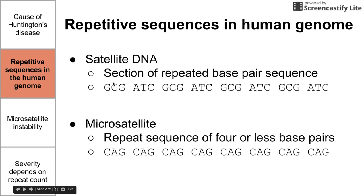Satellite DNA is a section of repeated base pair sequences. So if this is a section of DNA, we would consider this satellite DNA because it's repeating GCG-ATC. When these satellite sequences are very small, we call them microsatellites — specifically when there are four or fewer base pairs in length. This is an example of a microsatellite where we see the CAG codon repeated again and again.